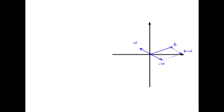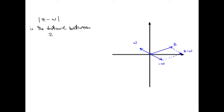Let's write that down. The modulus of z minus w is the distance between z and w — and w and z. The order doesn't make much difference because it's the modulus.